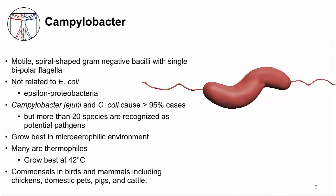Campylobacter are spiral-shaped bacteria that swim using flagella, which are found on both ends. Unlike the other bacteria I have talked about, it is not related to E. coli. It is in its own group, Epsilon proteobacteria.